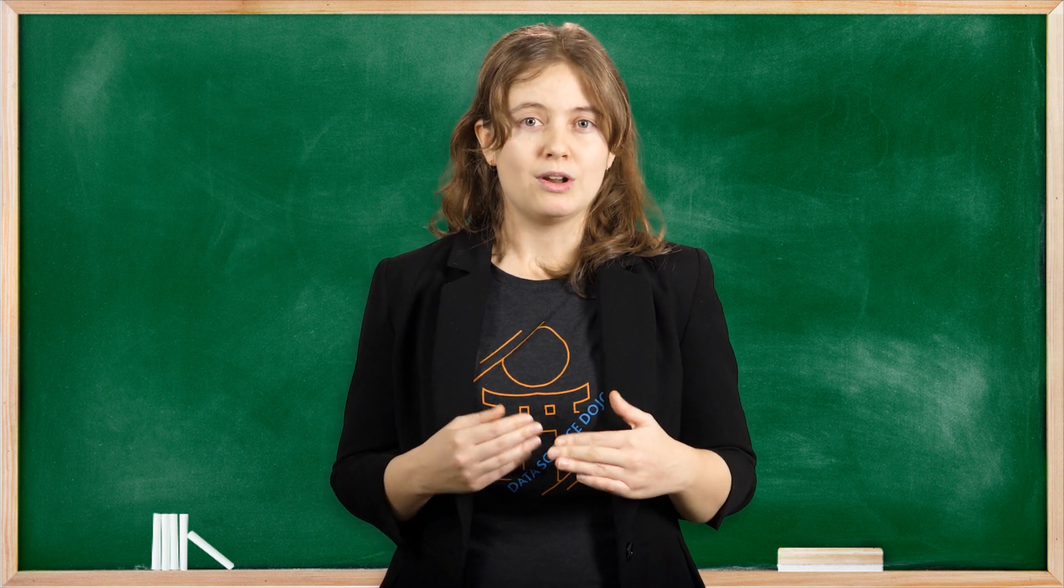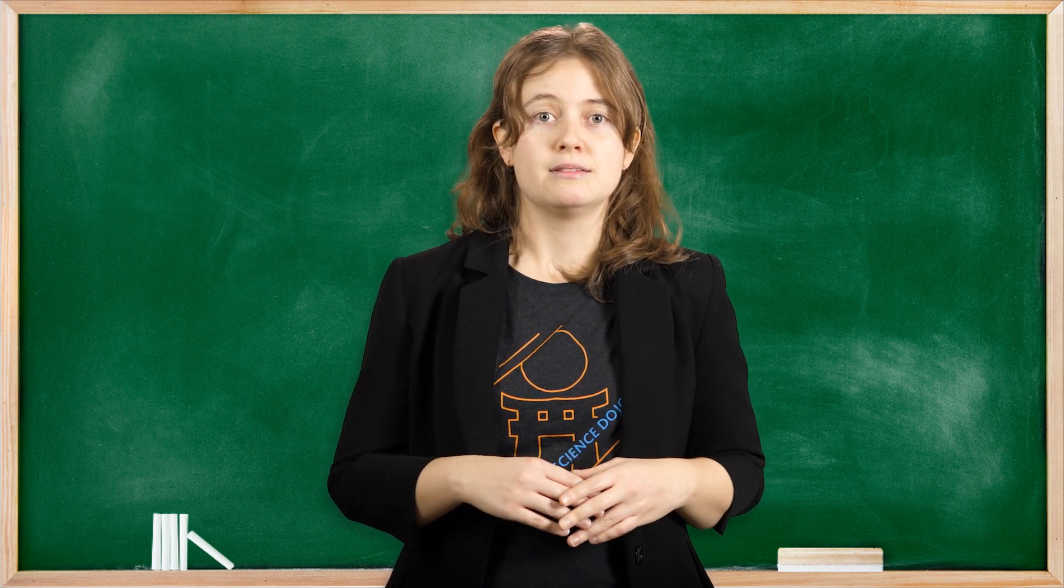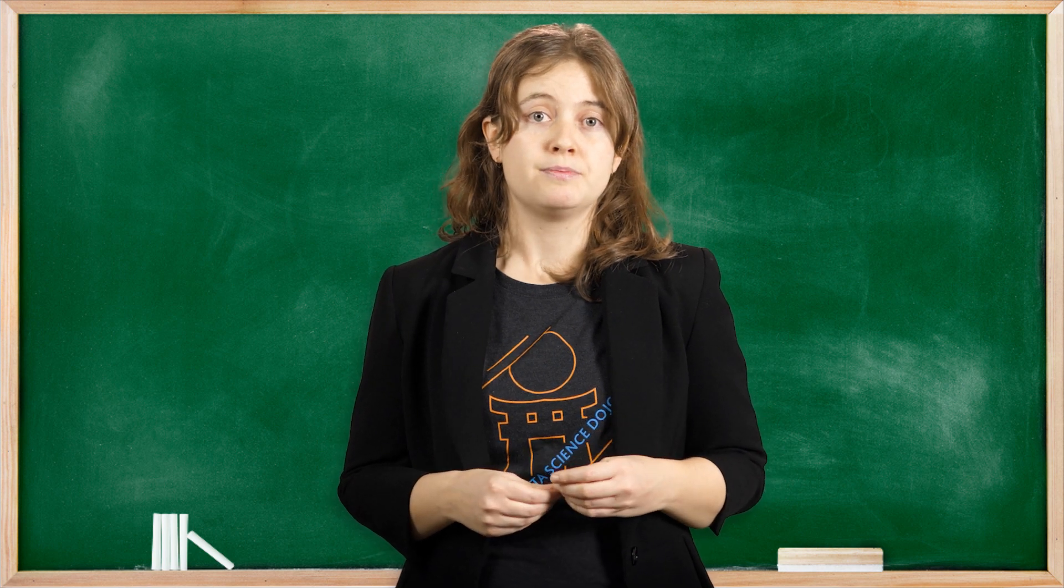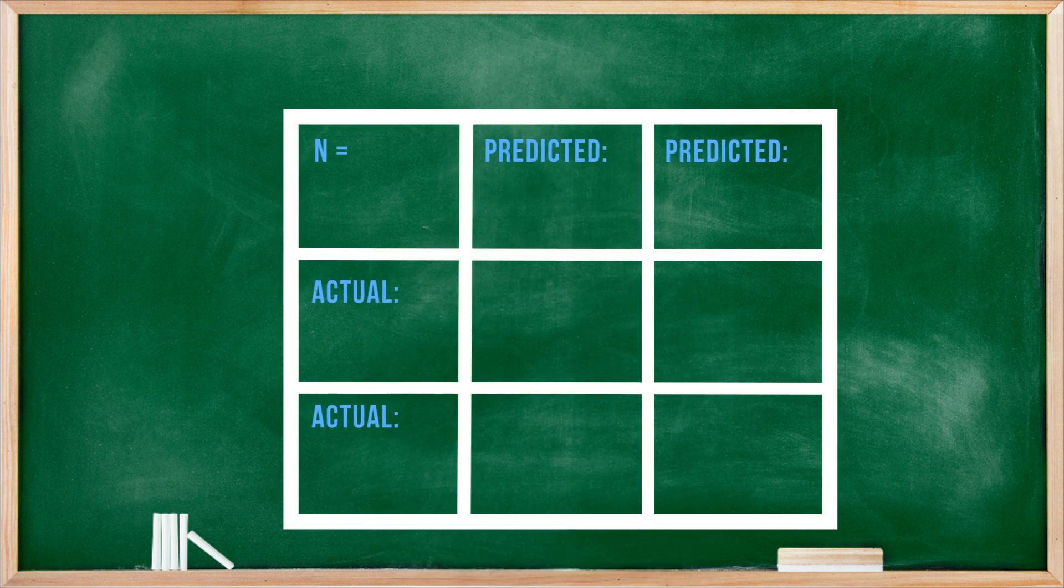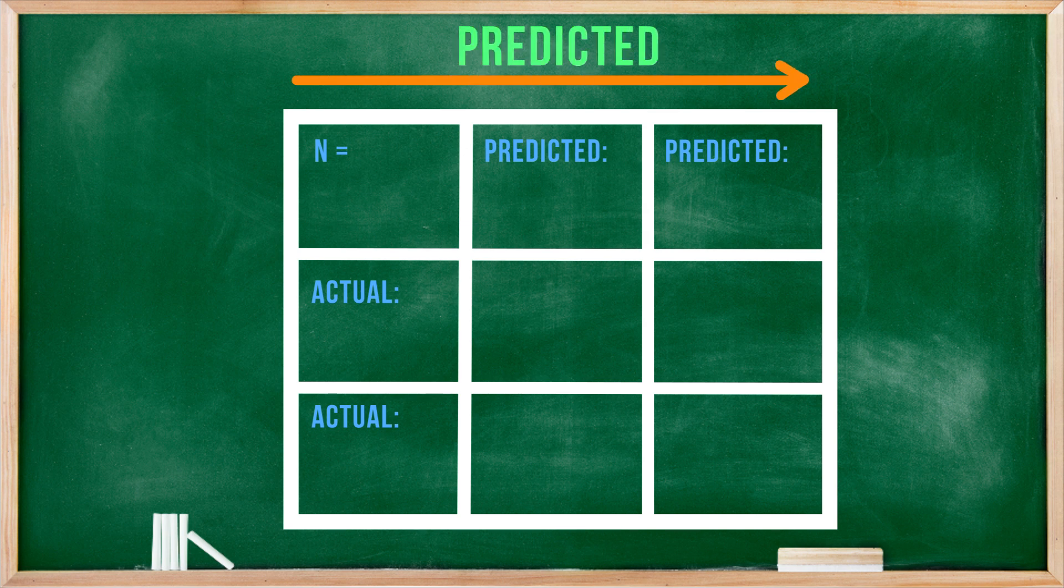So then how do we organize this in a way to lay out the number of correct A's and B's versus incorrect A's and B's? Well, we draw a grid. We place these into a matrix grid where the x-axis is the predictions made and the y-axis is the actual class label.